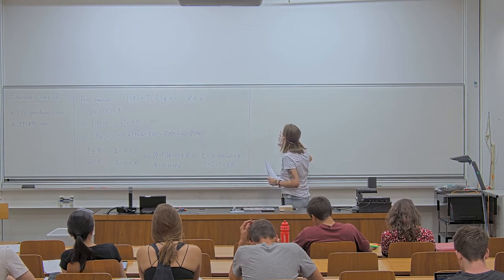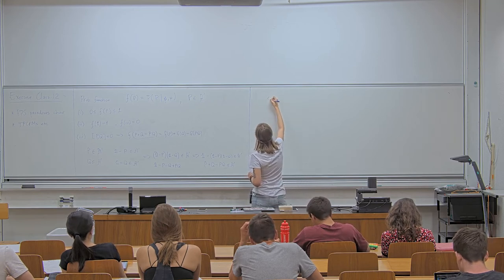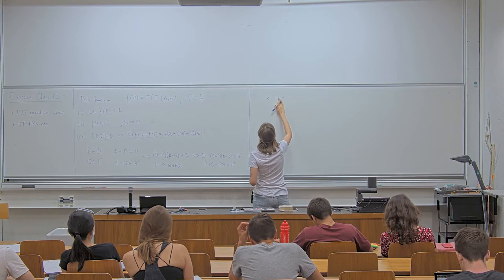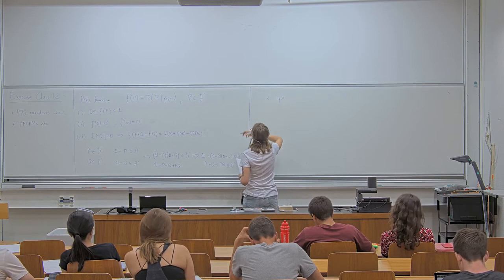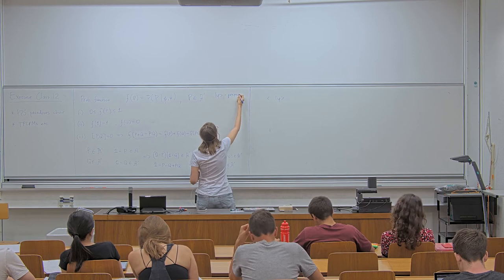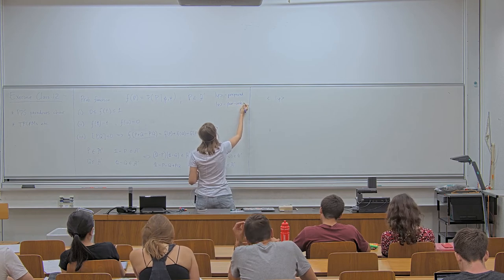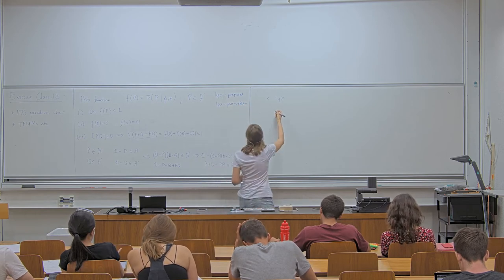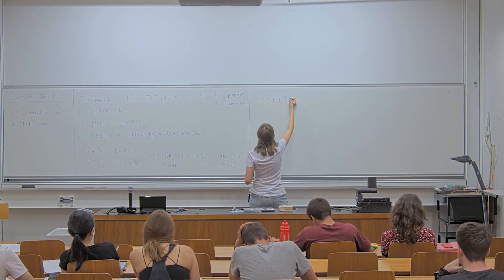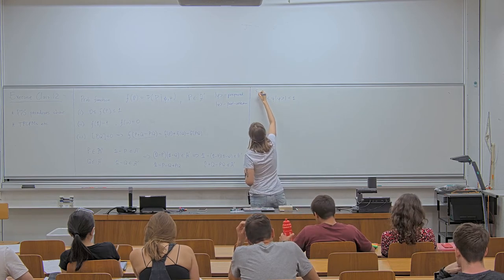The first result we're going to prove is that the overlap between the pre and post selection must be strictly between zero and one for a paradox to exist. Let phi be the pre-selection (prepared state) and psi be the post-selection. Then the modulus of the inner product <psi|phi> must be greater than zero and less than one.